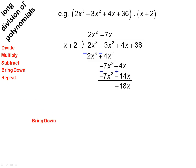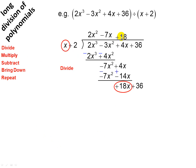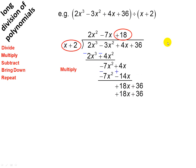And we're going to bring down — so 36 comes down there. Now we're going to say x into 18x gives you 18. Multiply: that gives us 18x plus 36. Subtract — change the sign on the bottom line and add. This has gone perfectly, so there's your answer.